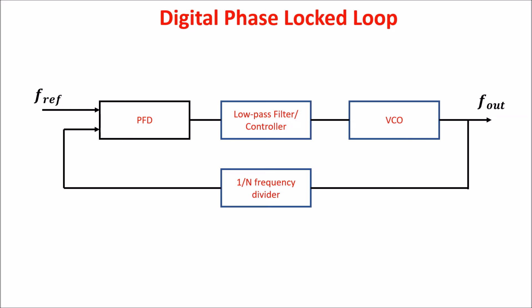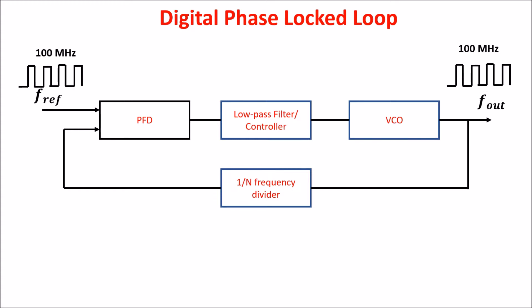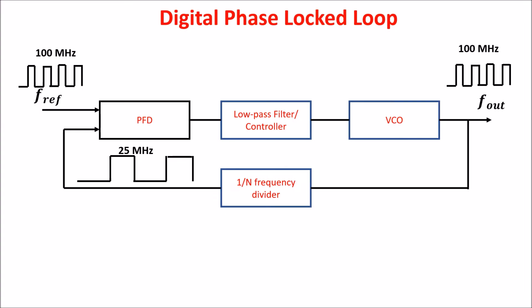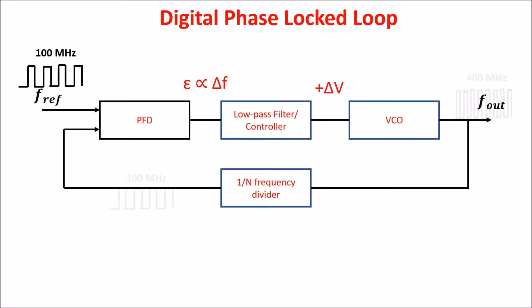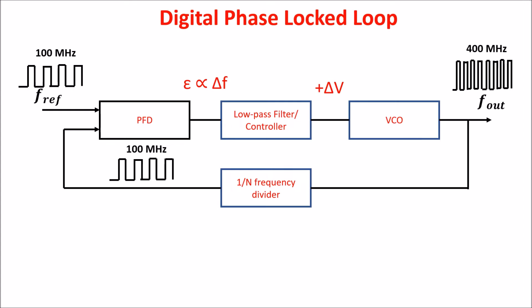Now let's see what happens if we put a frequency divider in the loop — say, divide by 4. Initially, the output frequency equals the input frequency, but because of the frequency divider, the PFD receives two different signals, one with four times the frequency of the other. The PFD detects the difference, producing an error which increases the VCO input voltage, increasing the frequency until the PFD detects no difference — meaning both input signals are equal. In this situation, the output frequency is four times the reference frequency. In this way, a PLL can multiply a reference signal and stay locked to it, generating a stable and high-frequency signal.